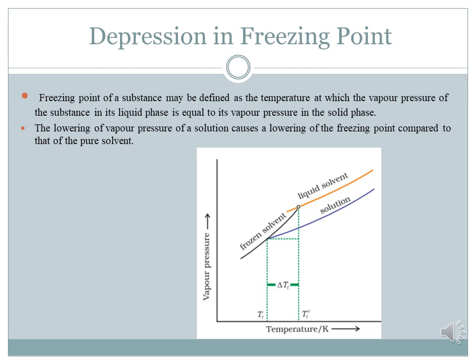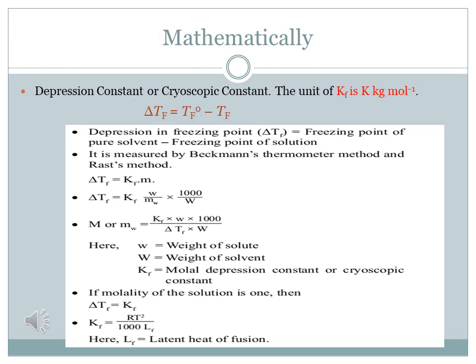The mathematical equation for depression in freezing point is: ΔT_F = T⁰_F − T_F. In detail: depression in freezing point equals freezing point of pure solvent minus freezing point of solution. We write the freezing point of the pure solvent first because, as seen in the graph, the freezing point of the pure solvent is higher — when we mix the solute, the freezing point of the solution decreases.